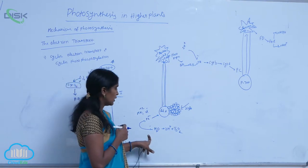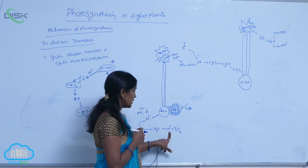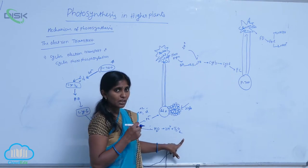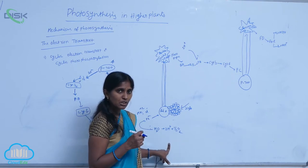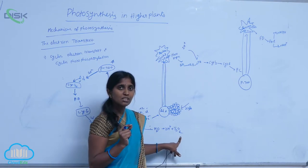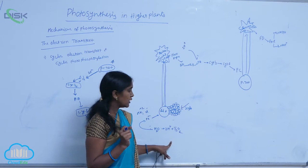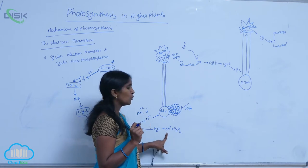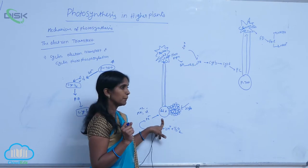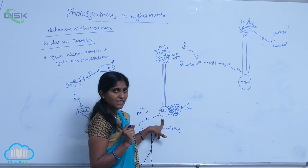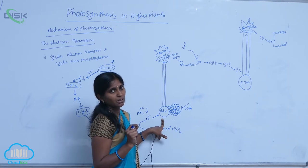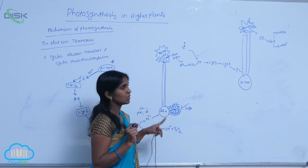One water molecule is split into two H plus and two electrons plus half O2. In non-cyclic photophosphorylation, one water molecule is split, which results in the release of half an oxygen molecule. Also, two electrons and two protons are released. The released electrons are taken by the reaction center P680, the oxidized P680. Then it gets reduced.